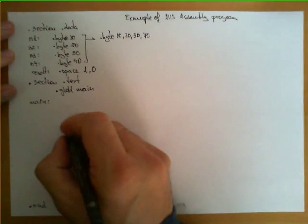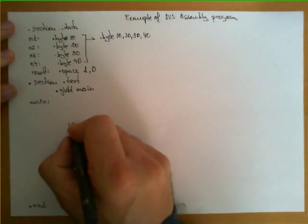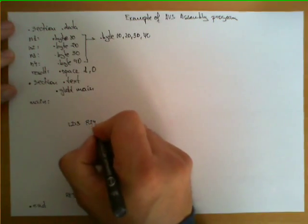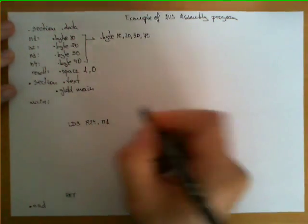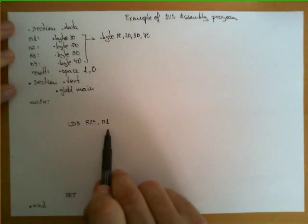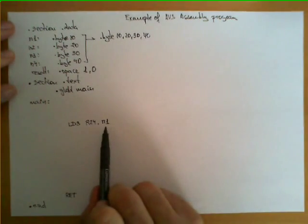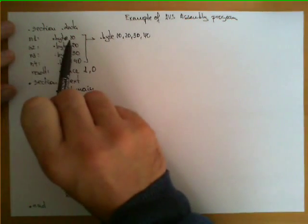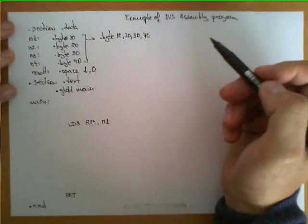So one first operation we would do is to load with instruction LDS in R24, register 24, the number n1. And we can do exactly with this instruction. Now remember, this label over here what is telling us is that we are loading in R24 the content in memory which corresponds to label n1.